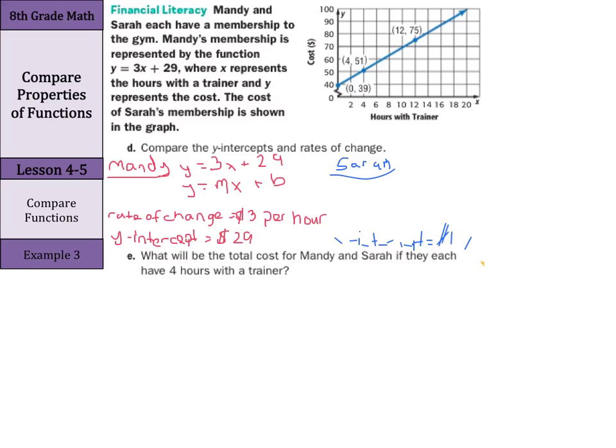And now we need to calculate the rate of change. Well, remember, rate of change m is y2 minus y1 over x2 minus x1. And now we get to pick two points. I would pick 0, 39 and 4, 51. And so y2 minus y1 would be 51 minus 39 over 4 minus 0 and 51 minus 39 is 12 over 4 which equals 3. So, Sarah's rate of change is also $3 per hour.